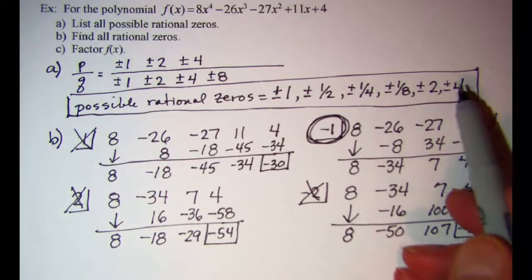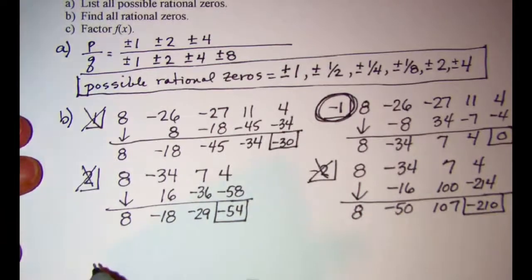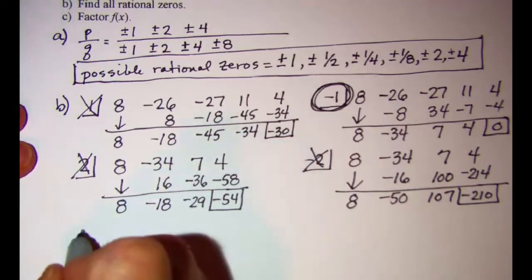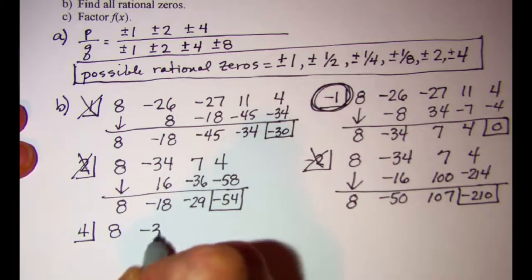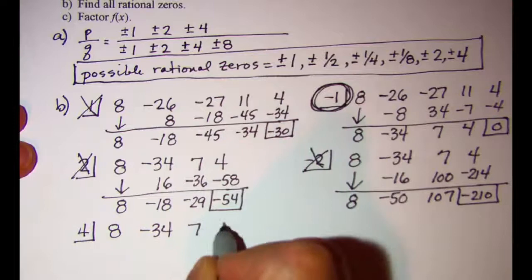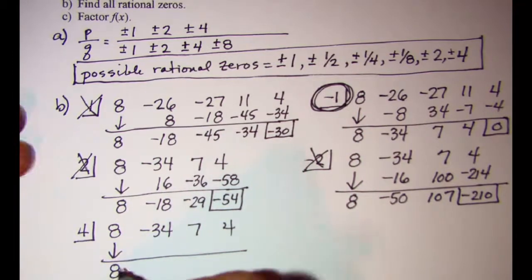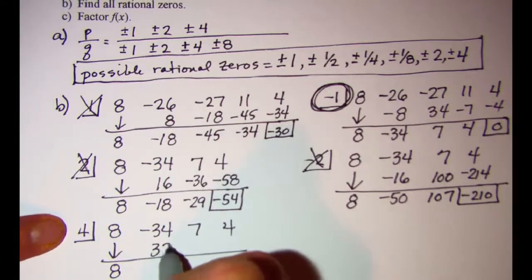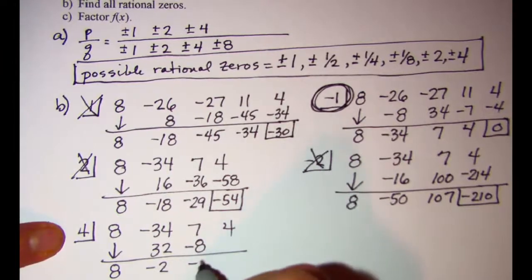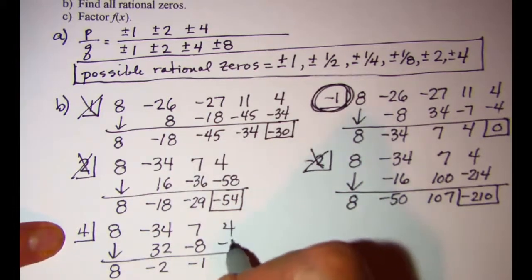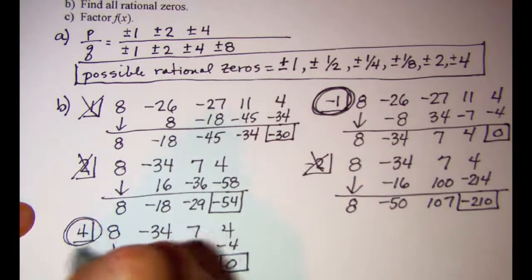Let's try k = 4 with coefficients 8, -34, 7, and 4. I get 32, giving -2; then -8, giving -1; then -4, giving a remainder of 0. So 4 is a zero.